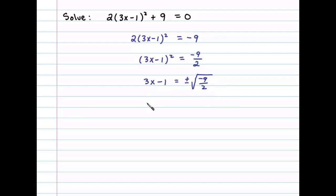In this case, we have ±√(-9)/√2. The square root of negative 9 is 3i, so we have 3i/√2.